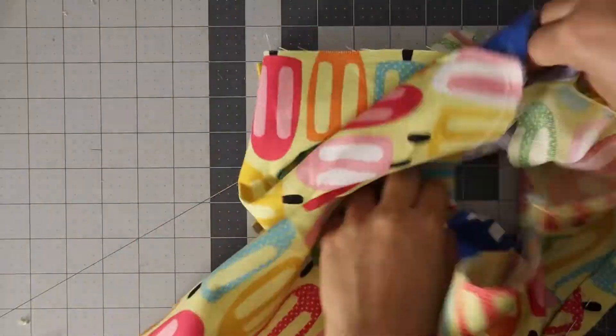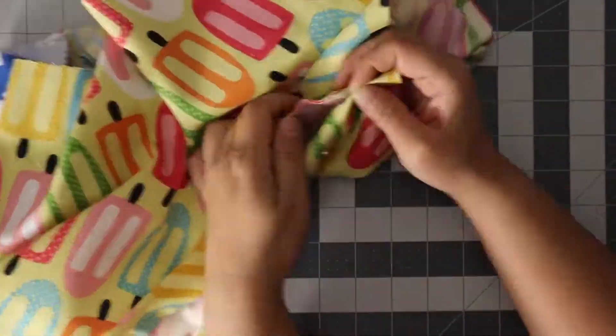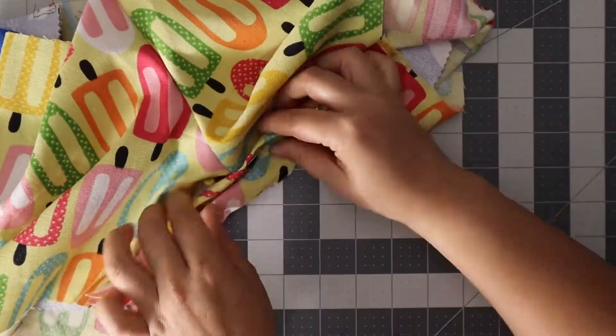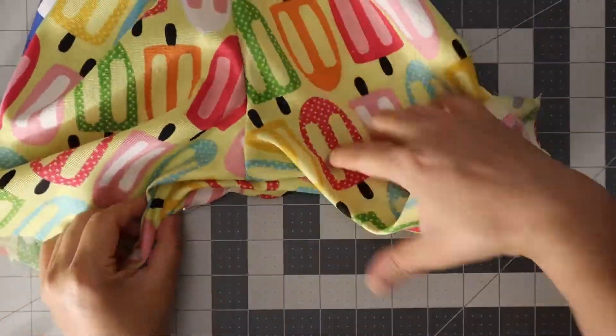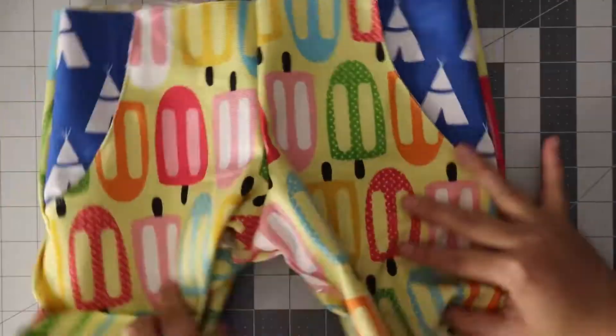Like that, and then you put your snaps on. So once those two are done, you can add snaps to close it, but we're not going to do that right now. We're going to do the waistband.